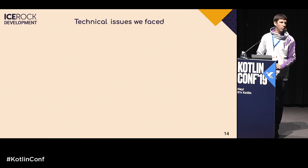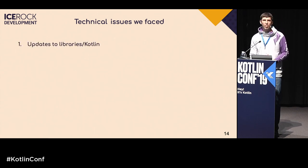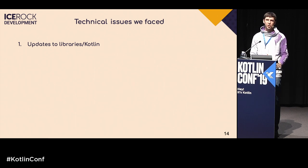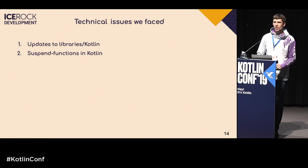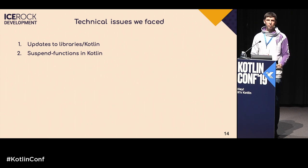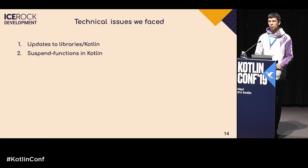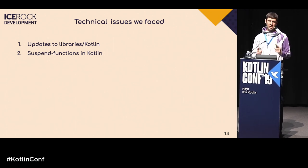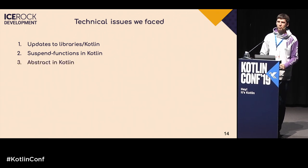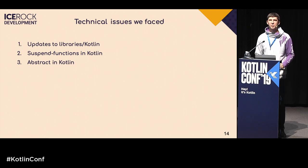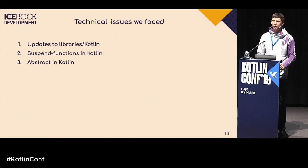Here are the technical issues we faced on this path. First, we recommend not updating libraries in Kotlin without real need because it can raise compilation errors. Second, suspend functions in Kotlin — after compilation, there are no suspend functions in Java or Objective-C. We use suspend functions only on the Kotlin side because the compiler erases them via transformation. Third, abstract methods — in Objective-C there are no abstract classes, and the compiler doesn't know if abstract methods are implemented, which can raise runtime errors.